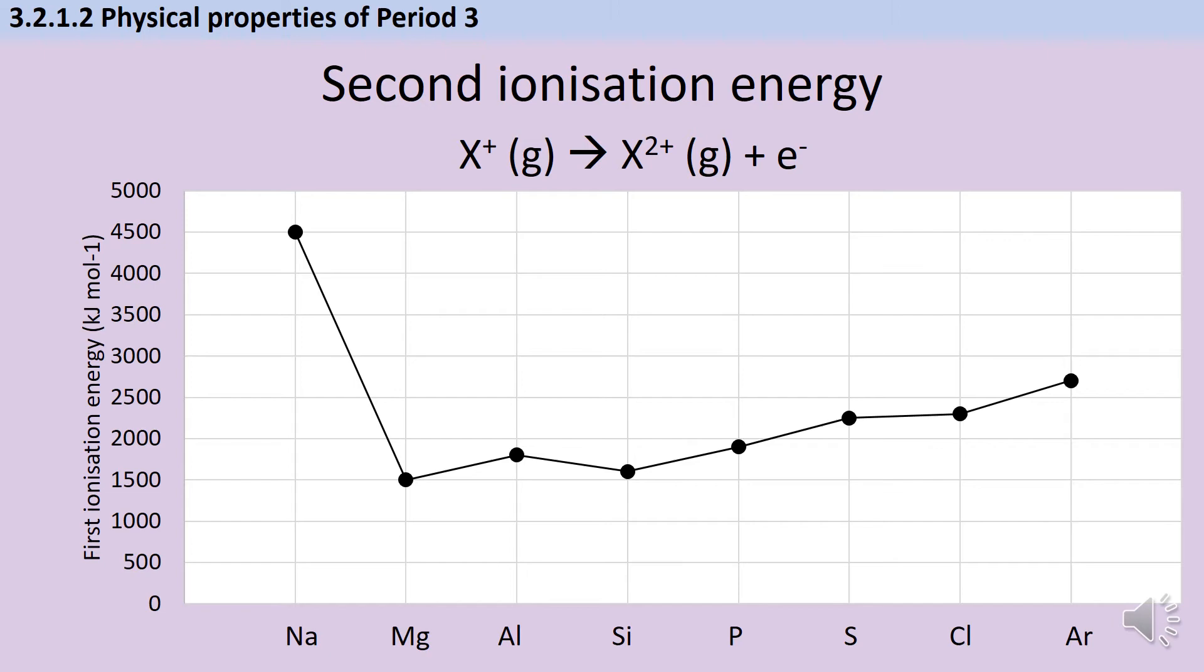While the specification talks about first ionisation energies, specifically with respect to period 3, it's important that you understand that the same trends apply for second and third and fourth ionisation energies. Subsequent ionisation energies are discussed in the physical chemistry specification, so you're expected to know that the second ionisation energy is the energy required to remove an electron each from one mole of singly positively charged gaseous ions, just as we have written in this symbol equation here. And you could be synoptically assessed in a question that asks you about the trends in second ionisation energy of period 3 elements. So for each of these subsequent ionisation energies, for the second and the third and so on, the trends will be the same, but each time the elements shuffle a long one. So whereas aluminium sees a dip for the first ionisation energy, it will be silicon that sees a dip for the second, and phosphorus for the third.